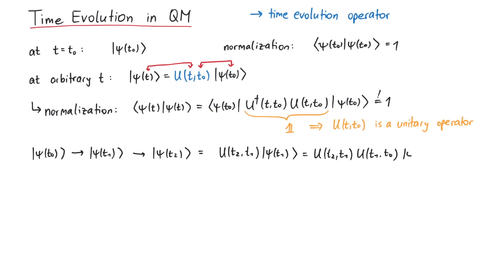This can be done using two operators. However, we could also just go from t0 to t2 directly. In that case, we would have to use only one operator. Therefore, u of t2 t1 times u of t1 t0 has to be equal to u of t2 t0.